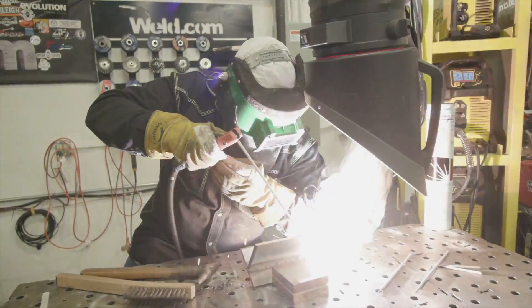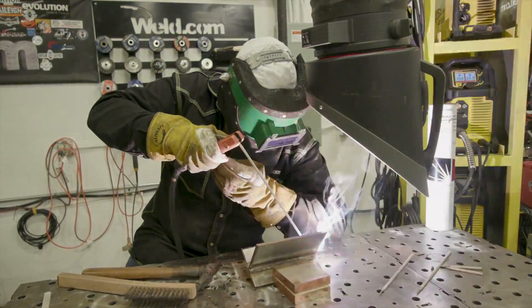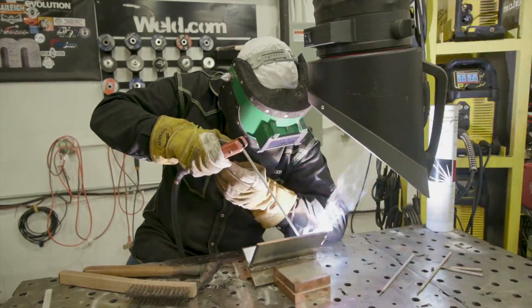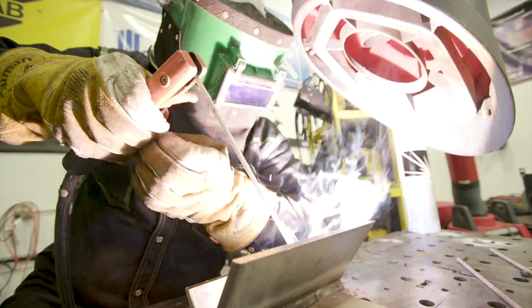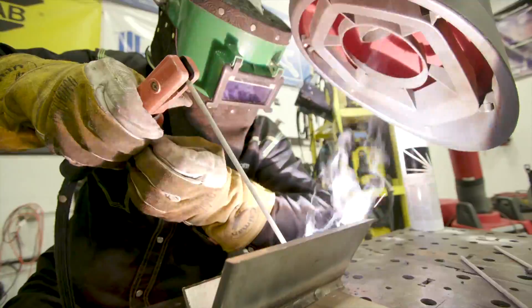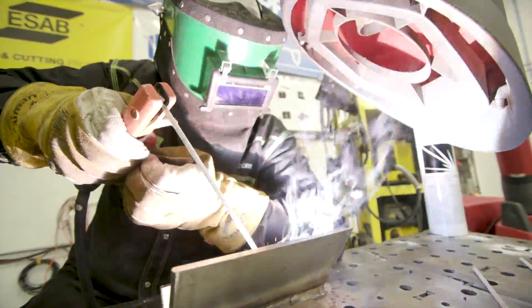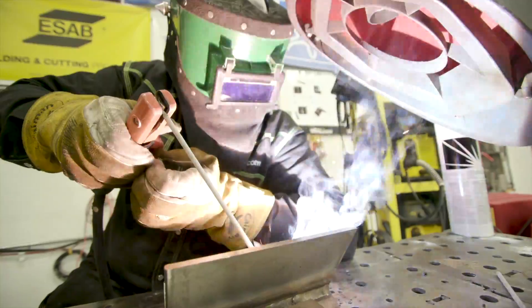To run this, I'm going to use a 309L Excalibur rod from Lincoln Electric. Big shout out to Lincoln for donating these rods. I got both these plates tacked up, sitting in a little corner replicating a 1F or a fillet weld in the flat position. We're going to start off with the basics. I'm sitting at 110 amps. I've got about 35% arc force on here.